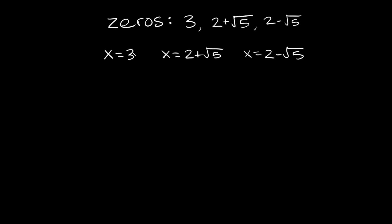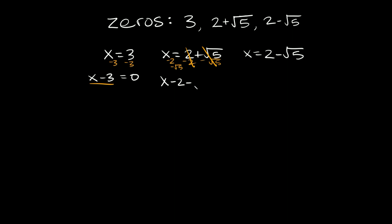The next thing we want to do is move everything on the right side over to the left side with x. So for x equals three, we subtract three from both sides and get x minus three equals zero — so x minus three is a factor. For x equals two plus the square root of five, we subtract two and subtract the square root of five from both sides, giving us x minus two minus the square root of five equals zero — that's a factor.